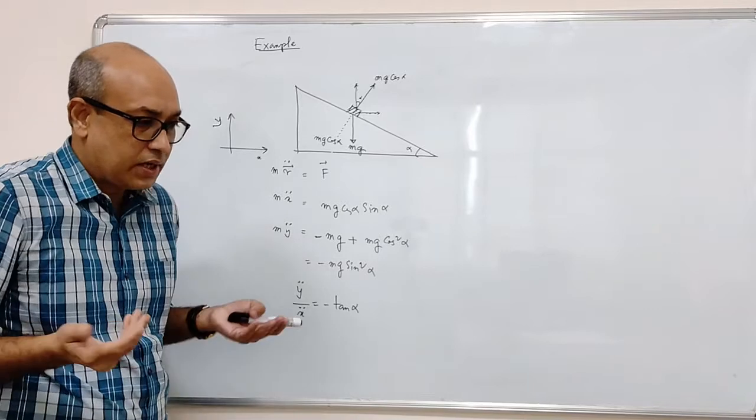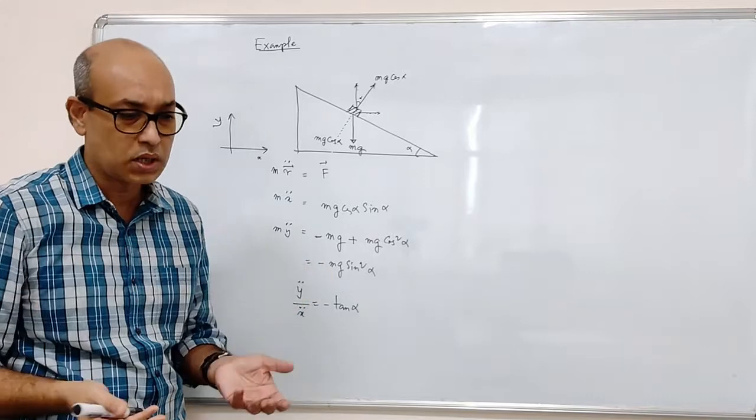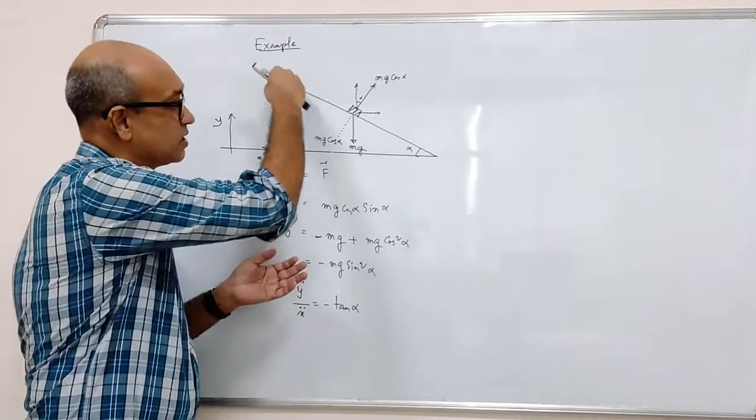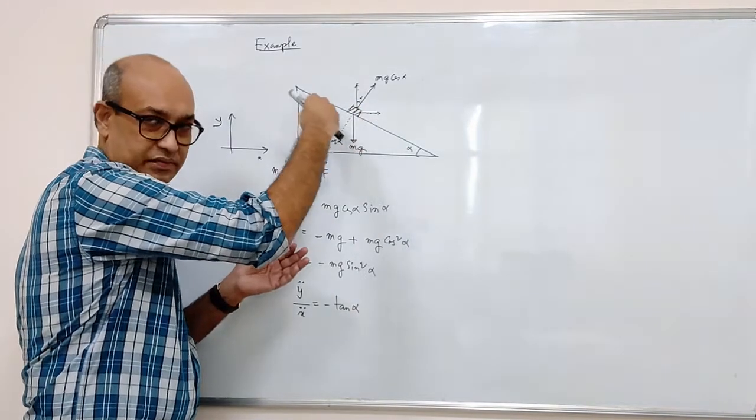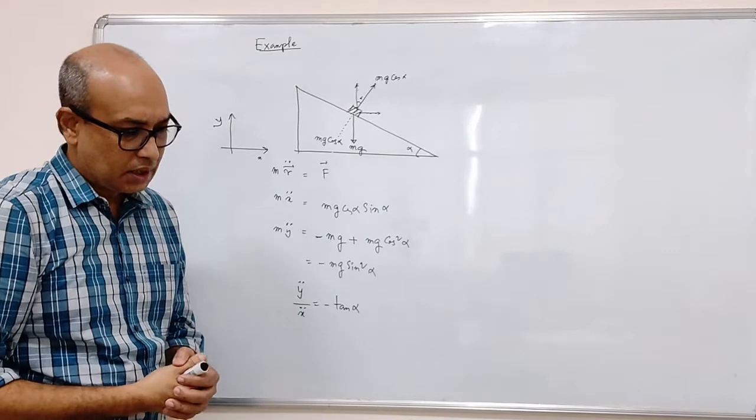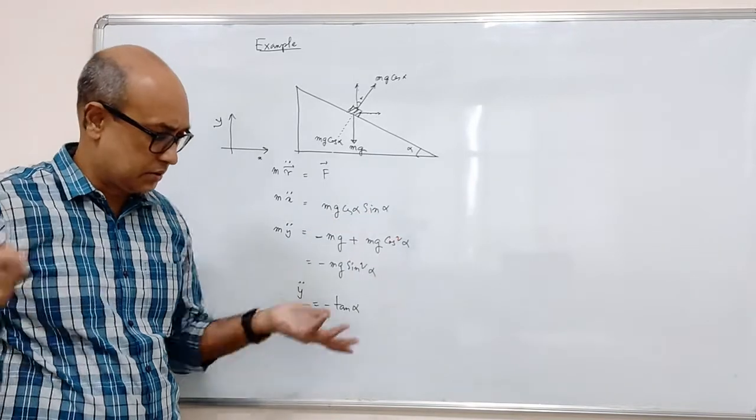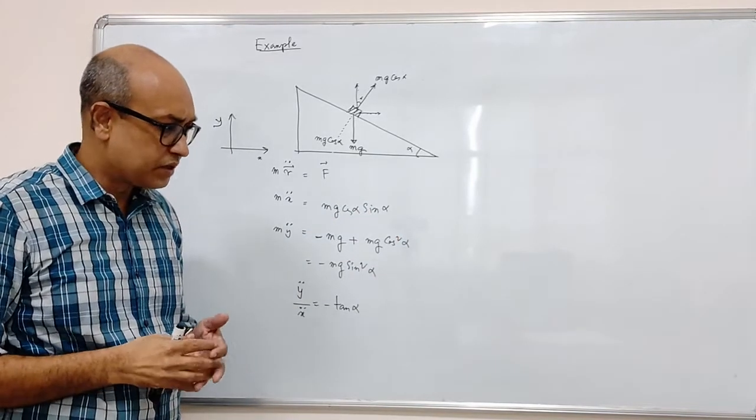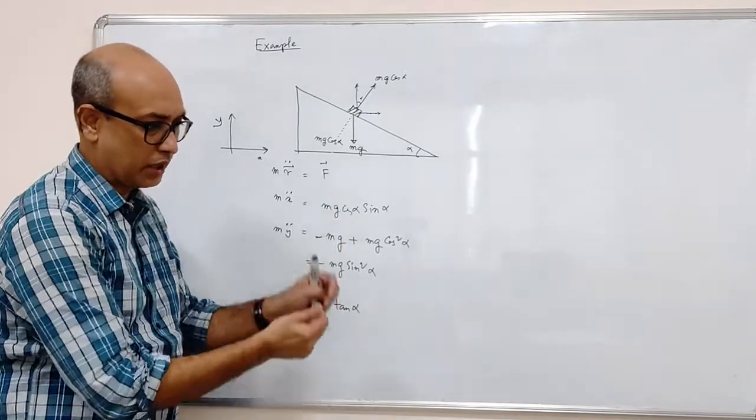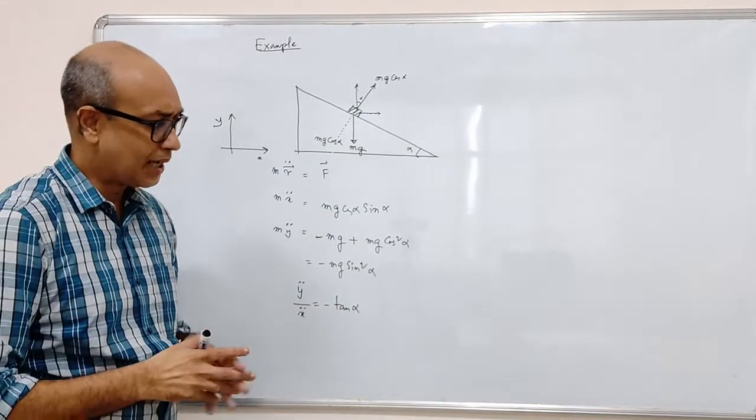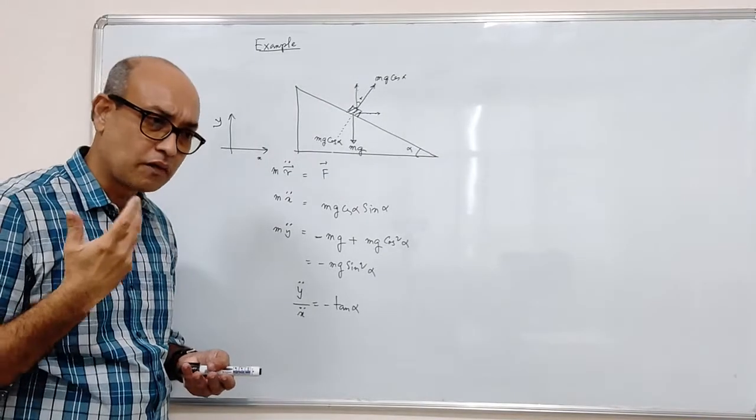Now, why shortcoming? I should not probably say shortcoming. Simply because if you know what the reaction force is, coming from this constraint that it cannot move, cannot leave this surface. It has to move along the surface. If you know that reaction force, then Newtonian scheme is perfect. You don't need anything else. But, often it happens that, although we know the geometrical restriction, that it cannot go this way, it cannot go that way, but calculating the reaction force or finding out intuitively is not often obvious.